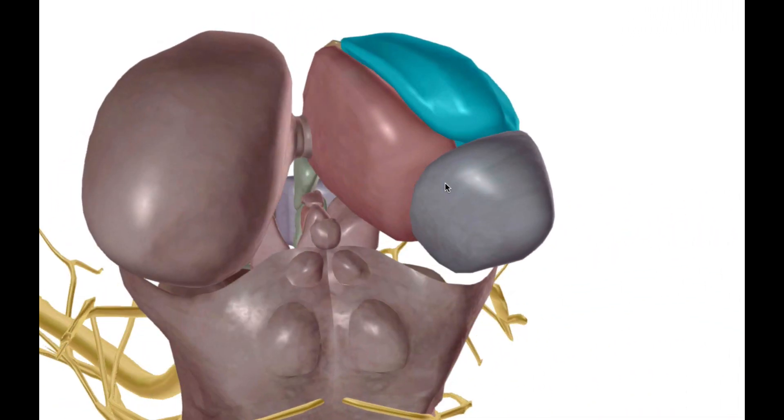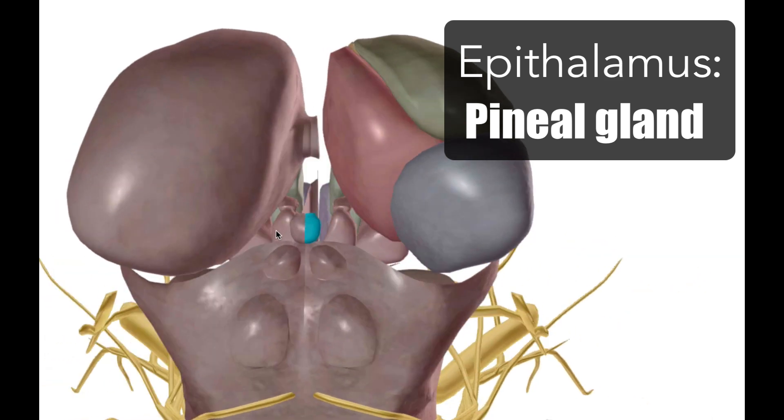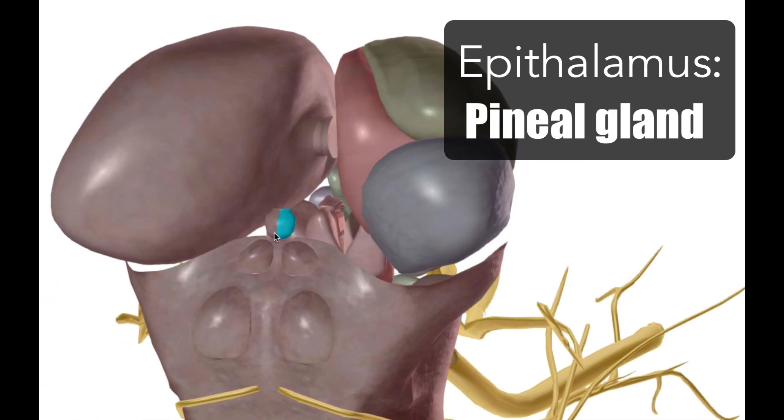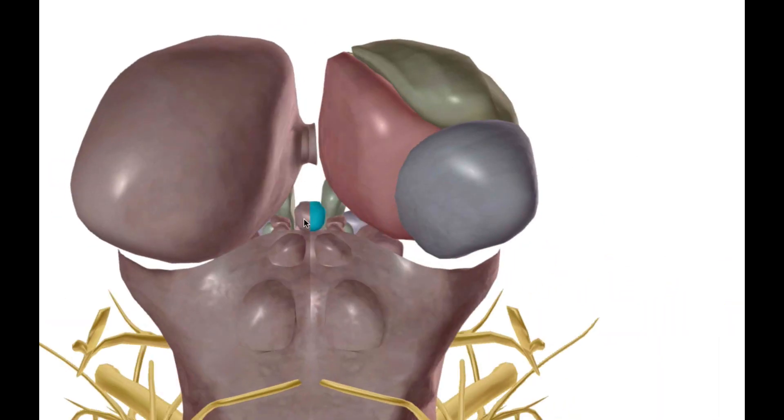Finally, we're going to turn around to the posterior aspect. We have this tiny little guy there. This is called the pineal gland. This is actually referred to as the epithalamus. So again, you have the hypothalamus, the thalamus, and then the epithalamus.